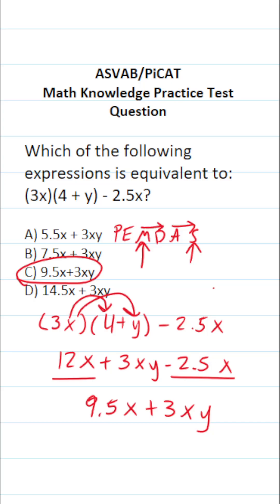Now if you couldn't do this part mentally, that 12x minus 2.5x, let me do it off to the side very quickly. This is the same thing as 12 minus 2.5. Again, add a decimal and a zero placeholder.